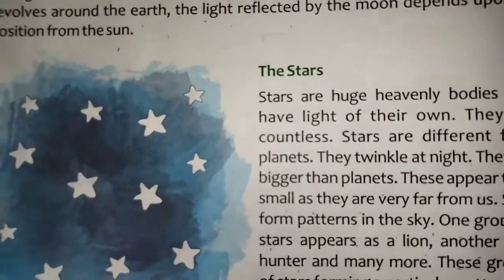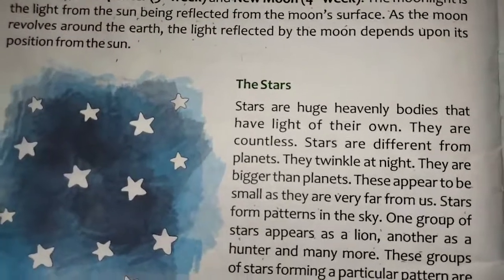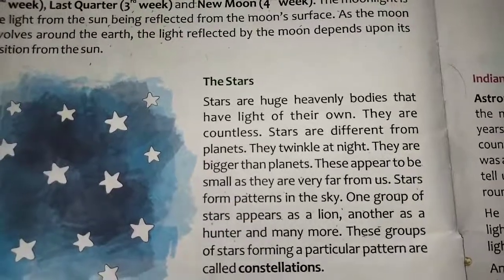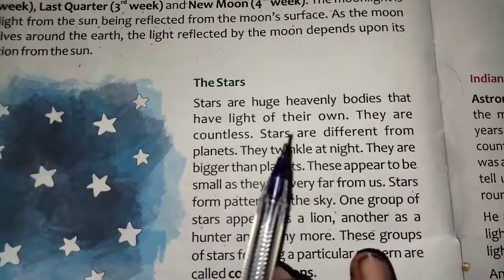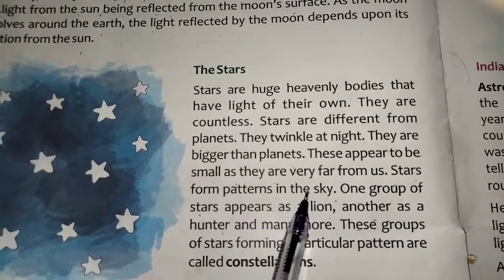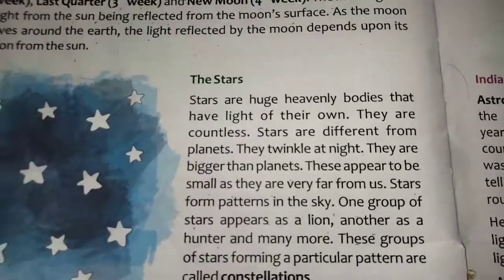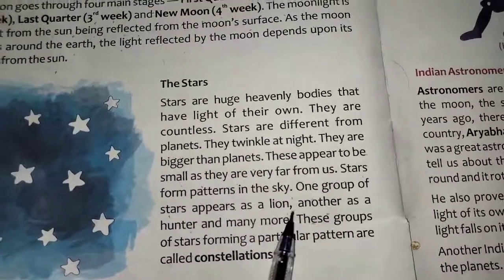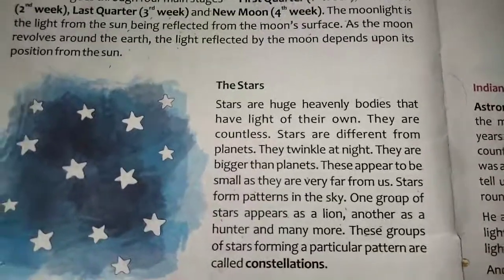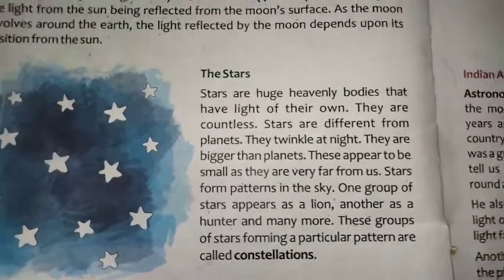Next, the stars. Stars are huge heavenly bodies that have light of their own. They are countless. Stars are different from the planets — they twinkle at night and they are bigger than the planets. These appear to be small because they are very far from us. Stars form patterns in the sky — one group of stars appears as a lion, another as a hunter, and many more.